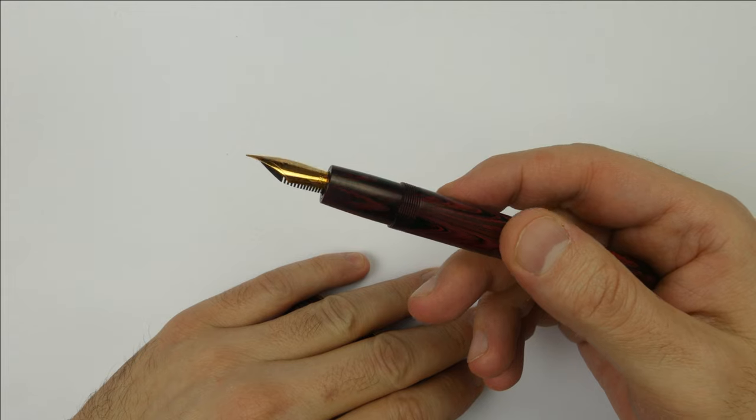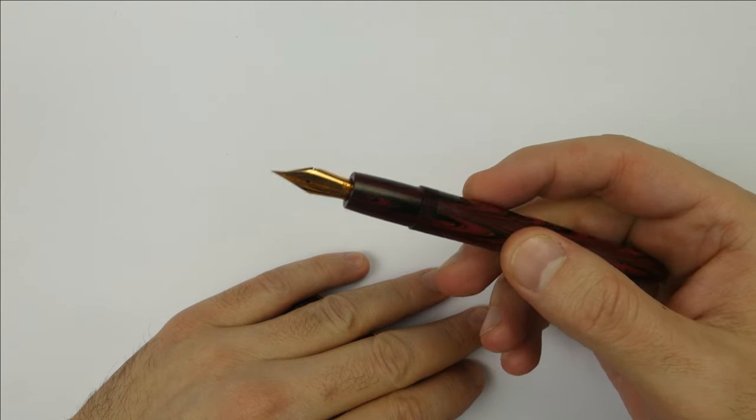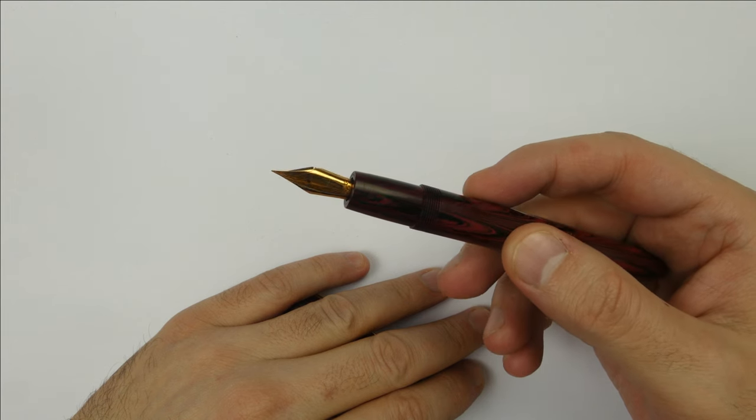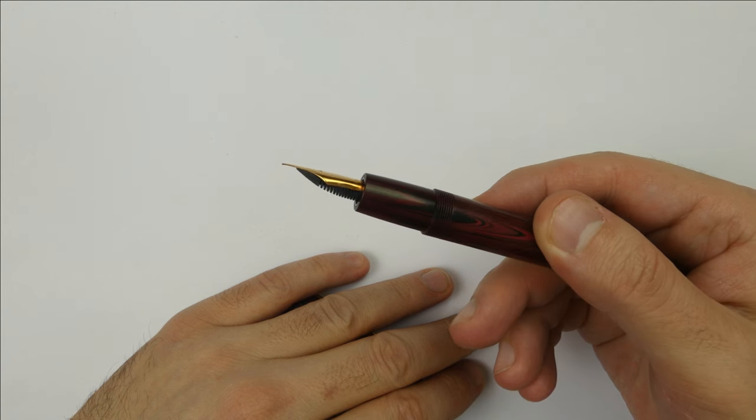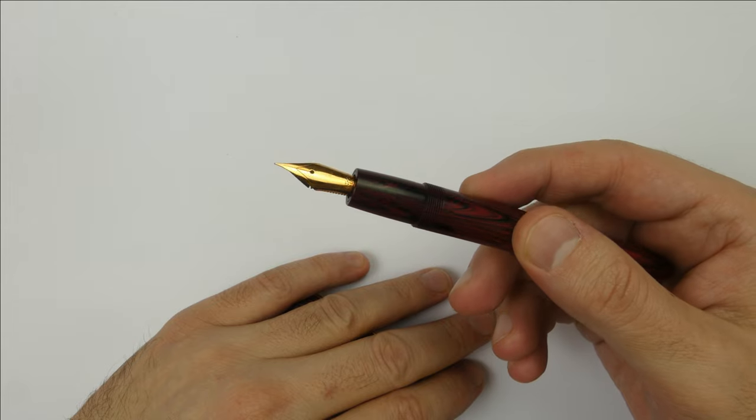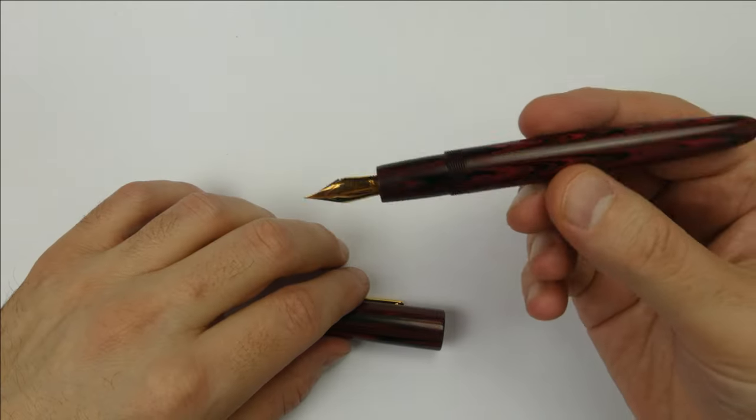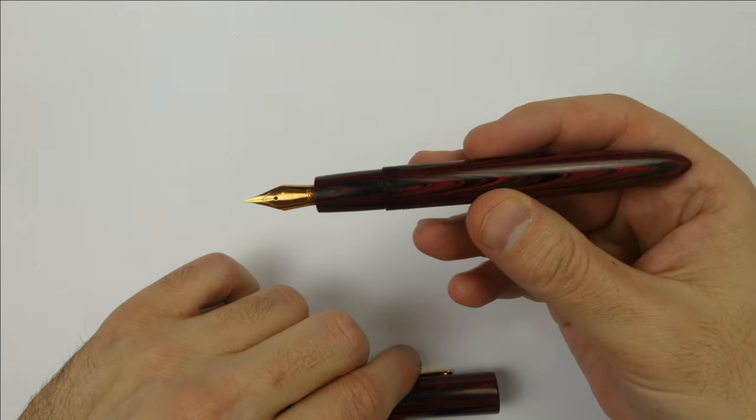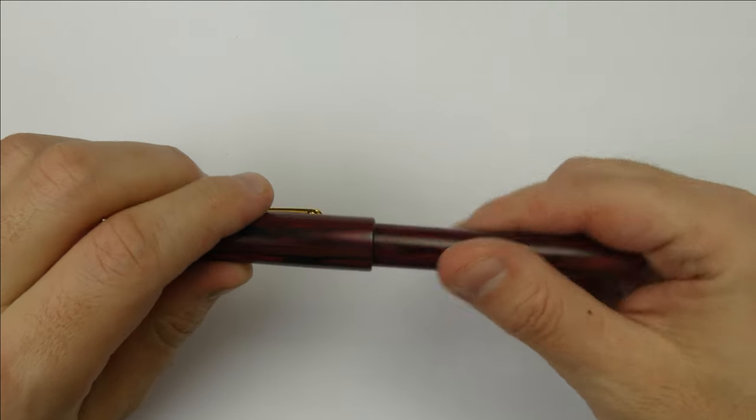Then we have the nib. This is one of the last custom flex nibs that Richard Binder made for Edison Pen before he retired. This nib is the most heavily modified nib I own. There is virtually nothing left of the original Jovo nib. Curvature, length, thickness, width, shape, the tip, and who knows what else has been modified by Richard Binder. And the writing experience is sublime.